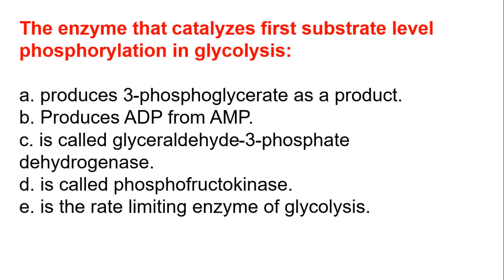The enzyme that catalyzes the first substrate-level phosphorylation in glycolysis: A, produces 3-phosphoglycerate as a product. B, produces ADP from AMP. C, is called glyceraldehyde-3-phosphate dehydrogenase. D, is called phosphofructokinase. E, is the rate-limiting enzyme of glycolysis. The answer is A, which produces 3-phosphoglycerate as a product.